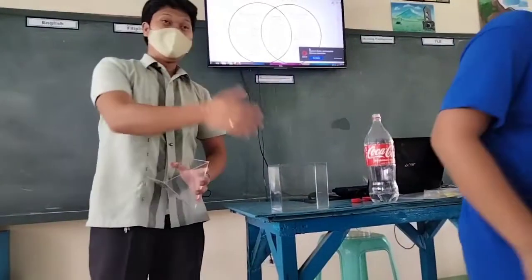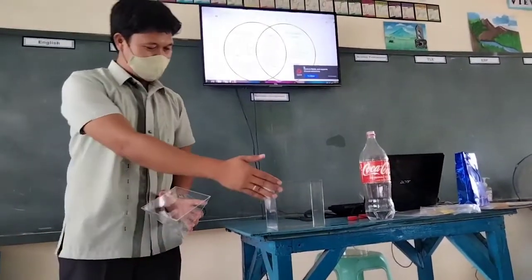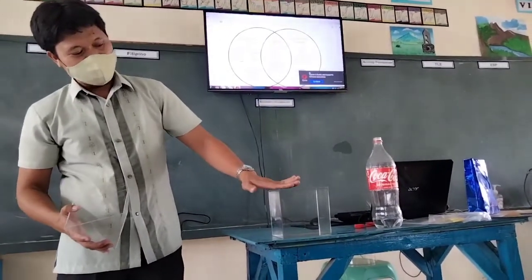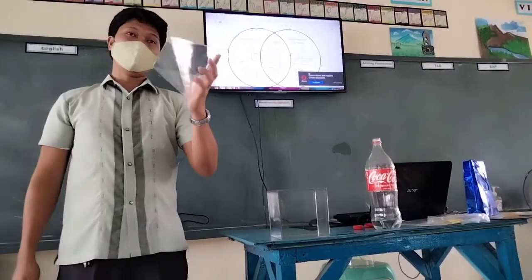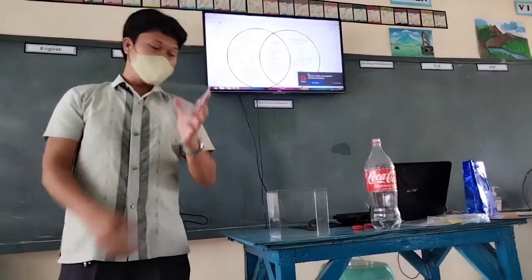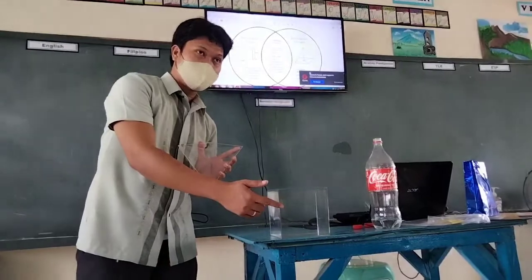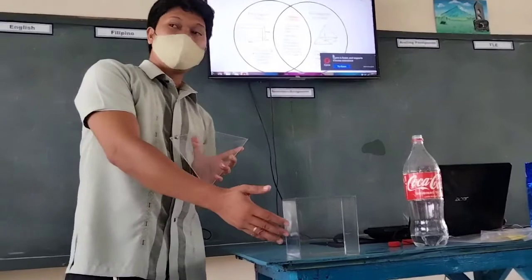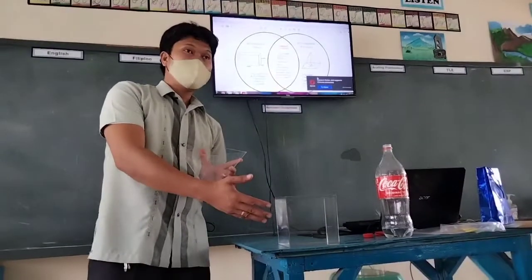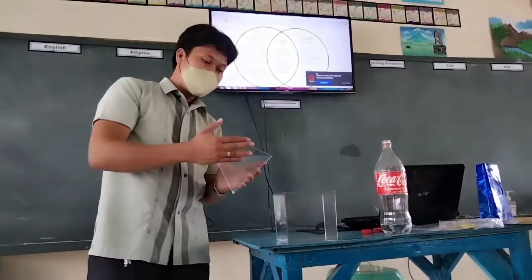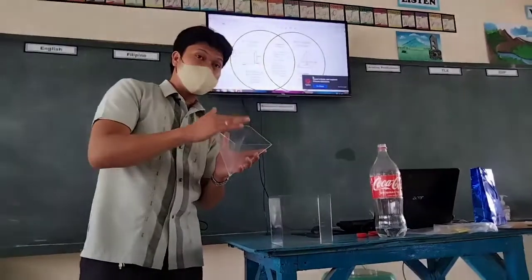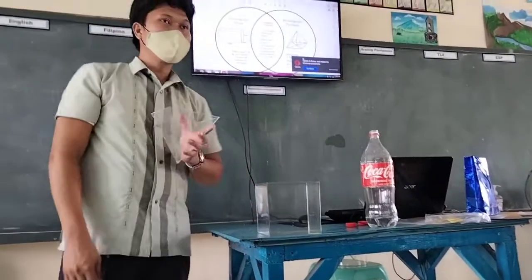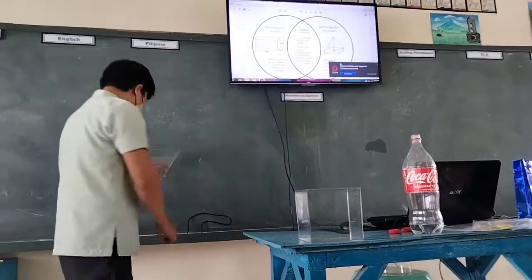It perfectly fits this solid figure — the water level is full. It means it is true that the volume of this pyramid is one third compared to the volume of this cube or rectangular prism. Conversely, the volume of the rectangular prism is three times the volume of the pyramid, and the pyramid's volume is one third of the rectangular prism's volume.